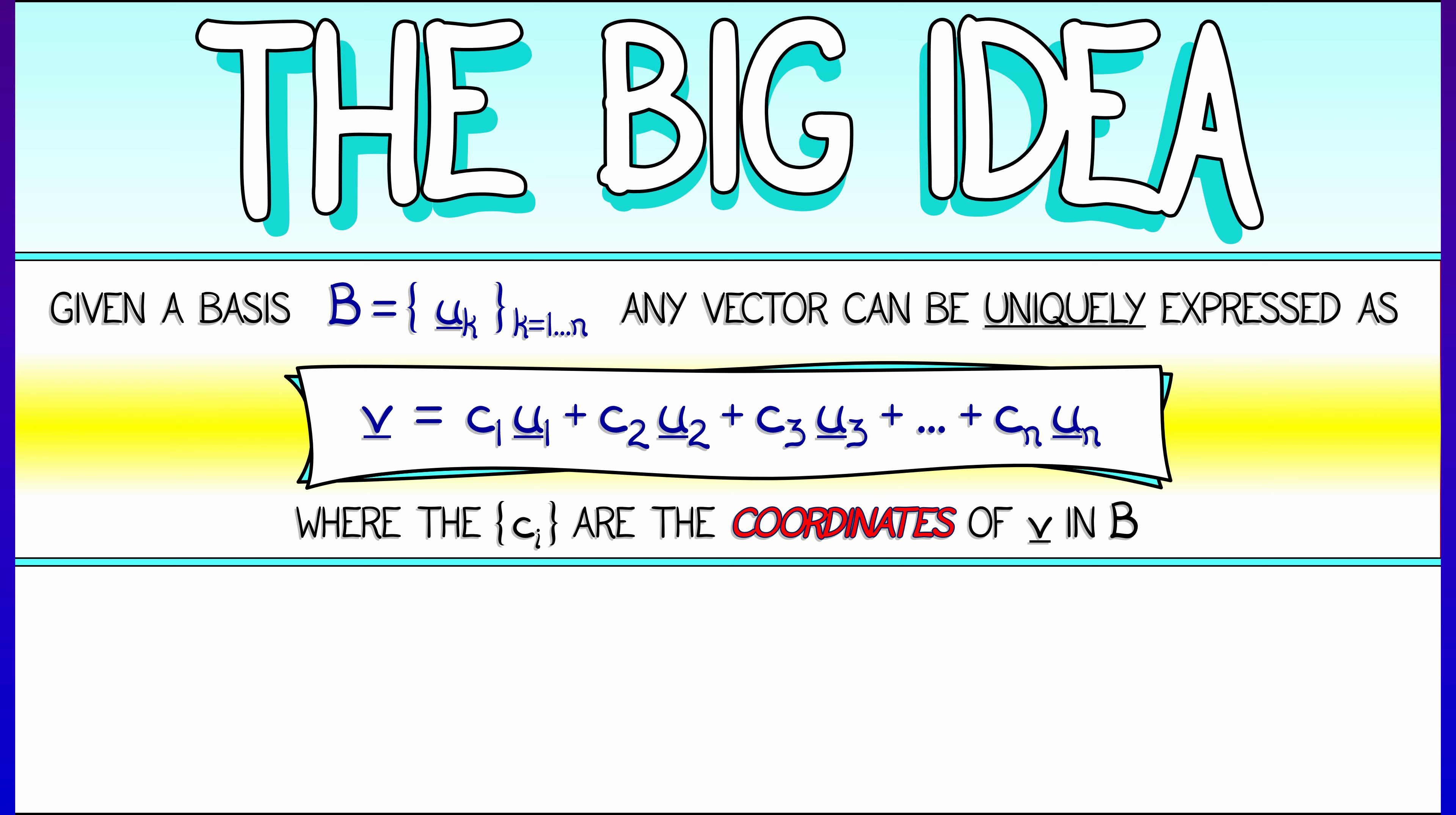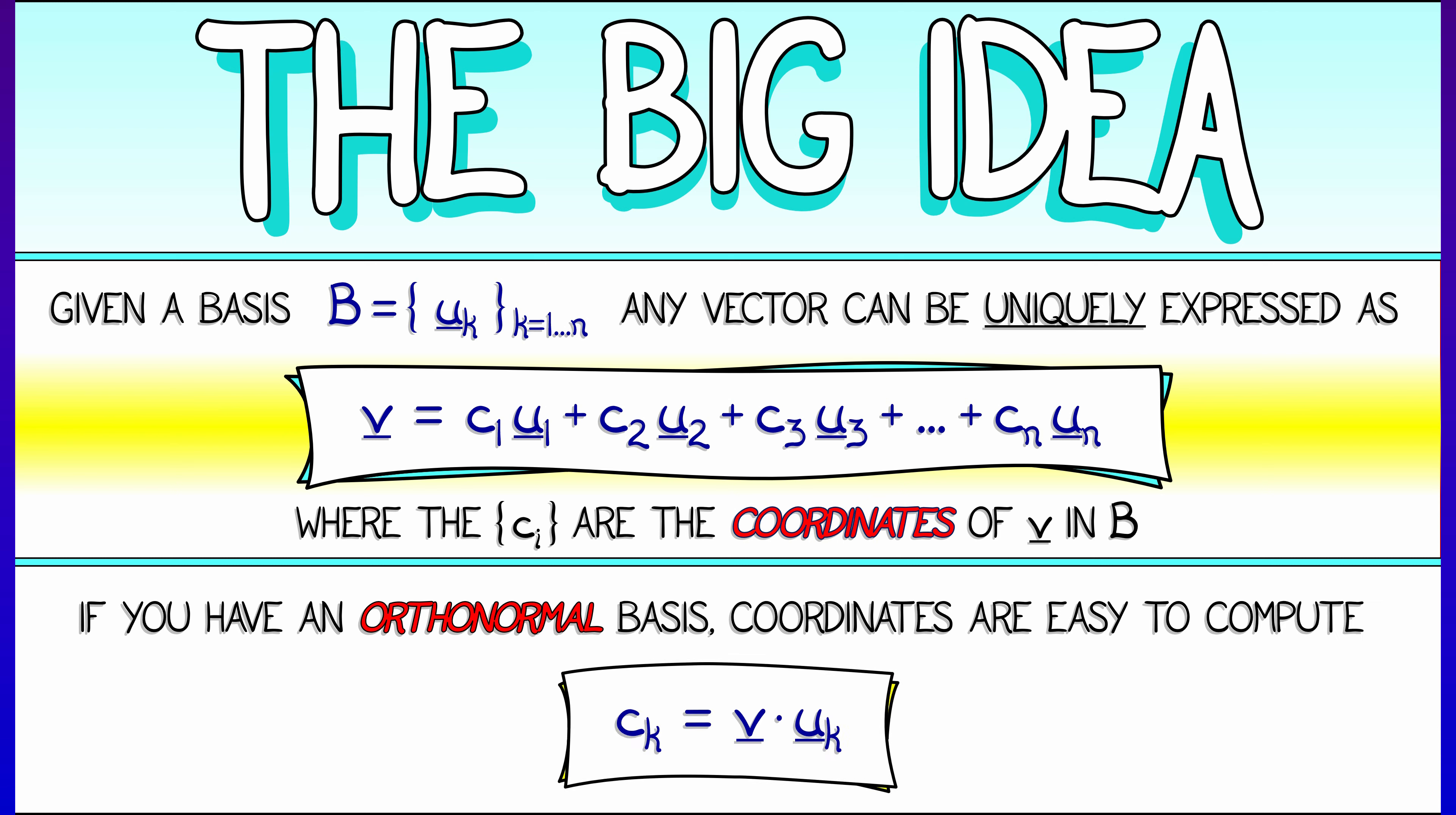For example, the standard basis in R^n, the basis vectors are e1, e2, up through en, and the components of the vector are the coordinates of the vector in that basis. Now, in that case and in the general case of an orthonormal basis, coordinates are wonderfully easy to compute. You simply take the dot product between your vector and the k-th basis vector. That is how you would compute the k-th coordinate. That works for the standard basis and it works for any orthonormal basis as well.